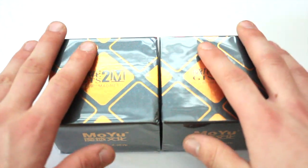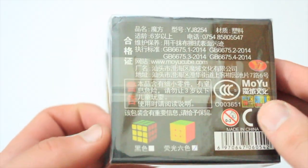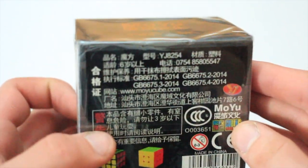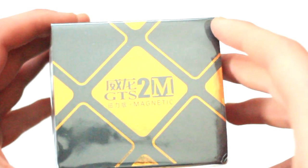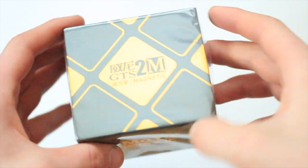When I heard that Moyu was manufacturing magnetic GTS 2s, I thought I would pick two up and see what they're like. This is the stickerless version, and I want to point out how cool these boxes look. They are the same as the original GTS 2 boxes, but in a black color scheme.